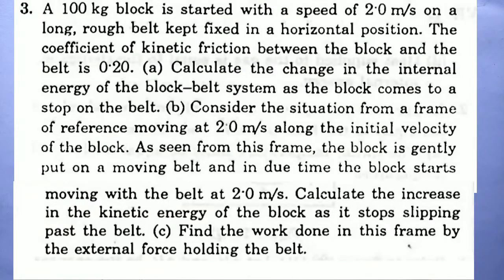Bomber Solution Chapter 26, Laws of Thermodynamics, Question 3. A 100 kg block is started with a speed of 2 m/s on a long rough belt kept fixed in a horizontal position. The coefficient of kinetic friction between the block and the belt is 0.2. First, calculate the change in the internal energy of the block-belt system as the block comes to a stop on the belt.